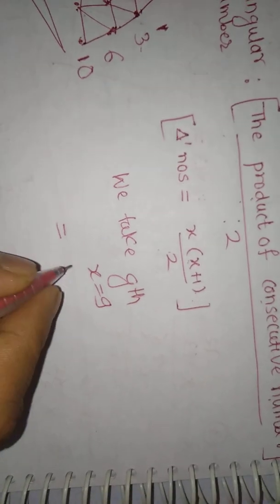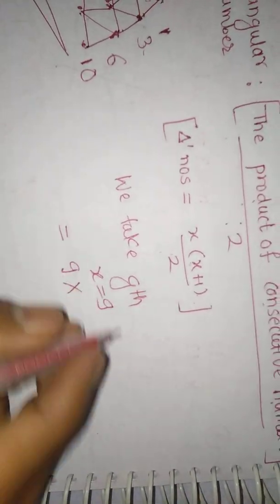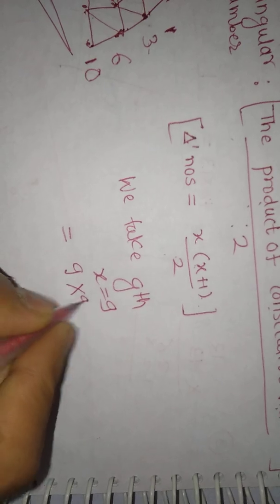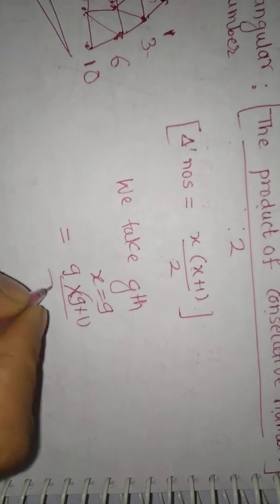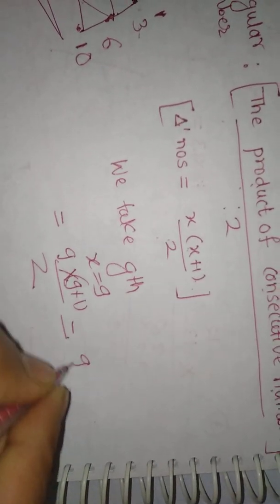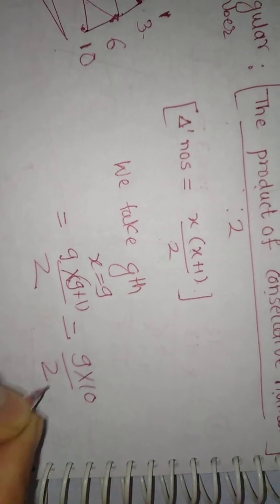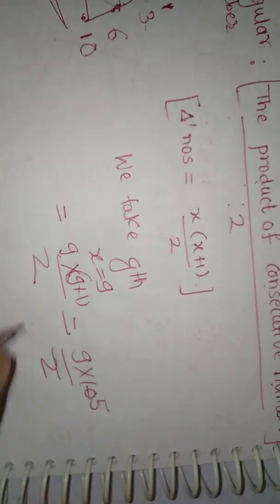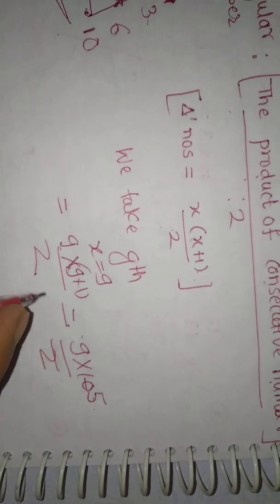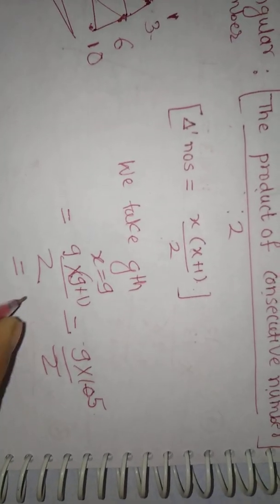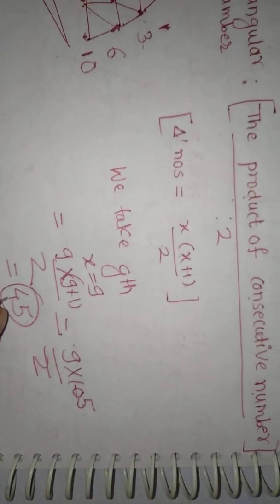This is Tx equals, we get x is equal to 9, and x plus 1 means 9 plus 1, 10 upon 2. Means 9 into 10 upon 2. 2 fives are 10, 9 fives are 45. This is correct. Then 9th triangular number is 45.